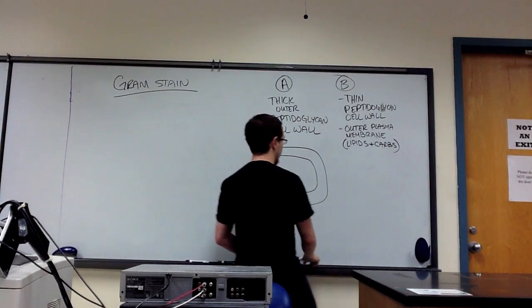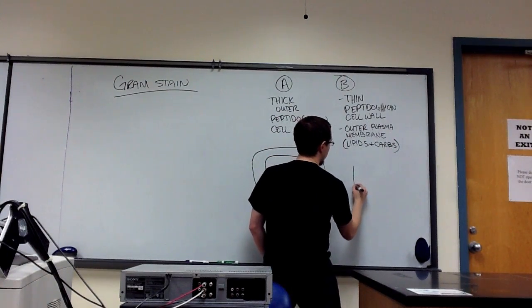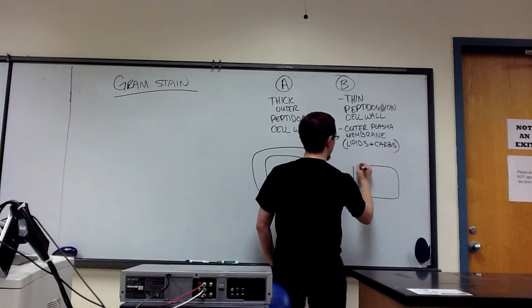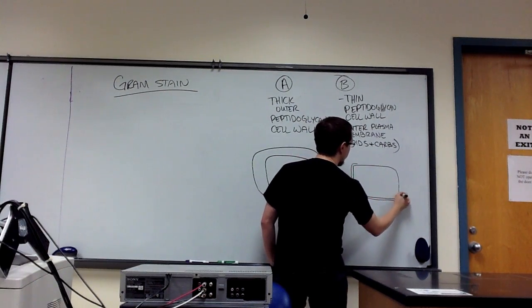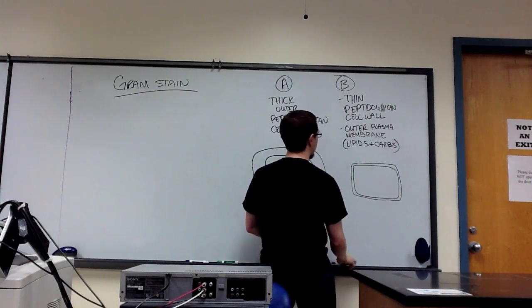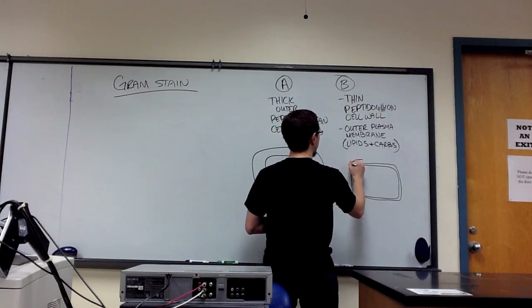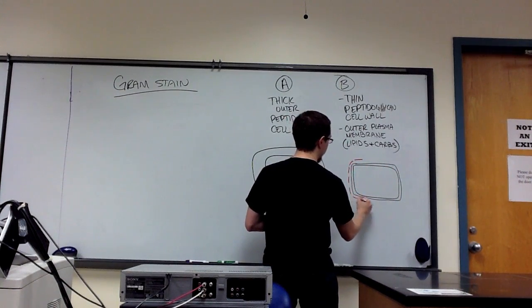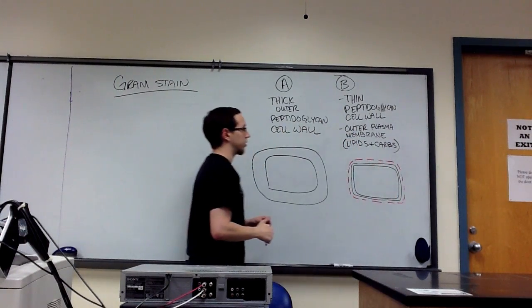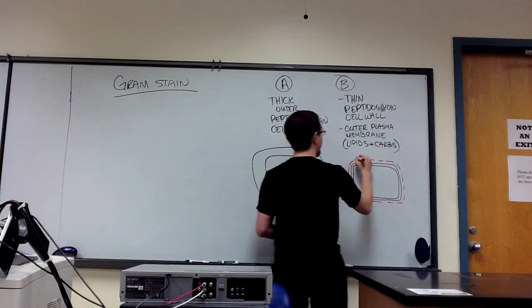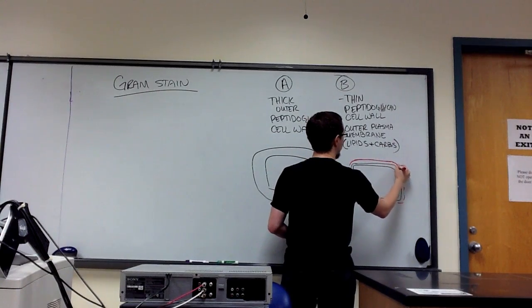So it looks something like this. This is the thin peptidoglycan cell wall, and then here's that outer layer. I'm denoting as dashed in pink. This represents that outer membrane.